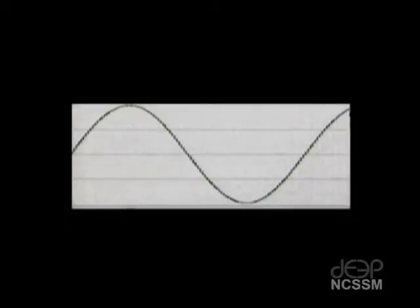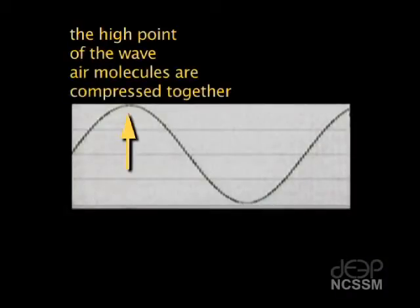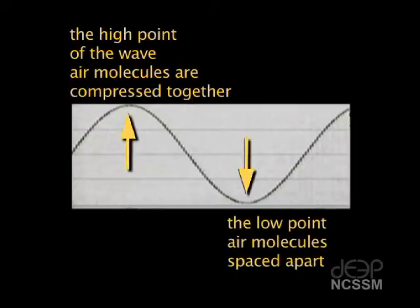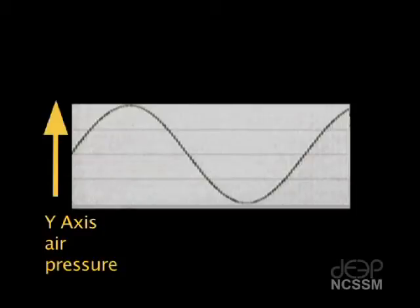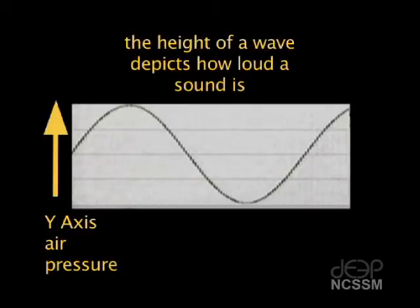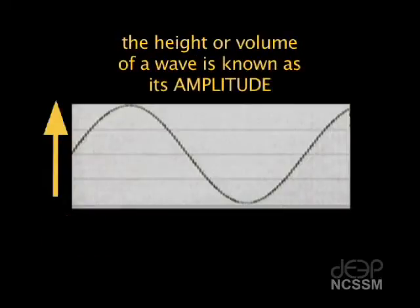Let's review the parts of the wave. The high point of the wave represents the place that air molecules are compressed together. The low point in the wave represents the place where they are spaced apart. The y-axis is air pressure. The height of a wave depicts how loud the sound is. Taller waves are louder, shorter waves are quieter.